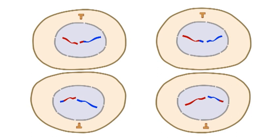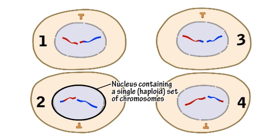This results in the production of four cells, each of which contains a single or haploid set of chromosomes with each chromosome consisting of a single chromatid.